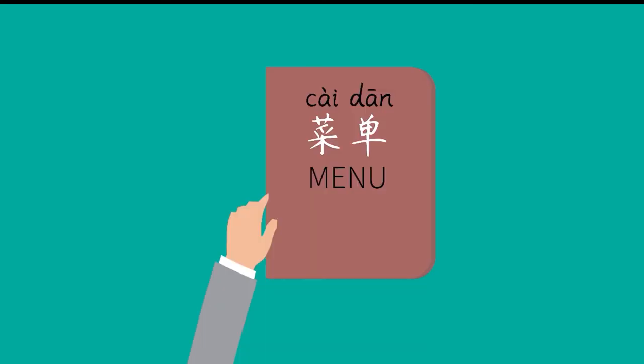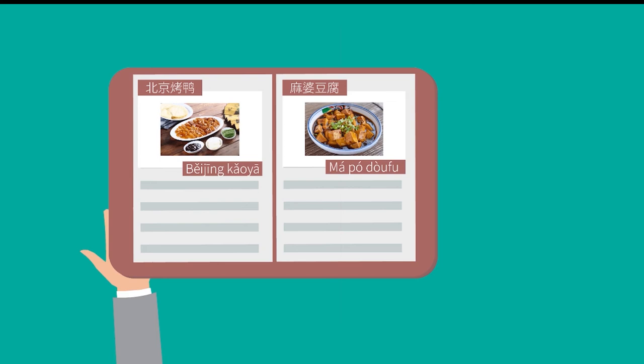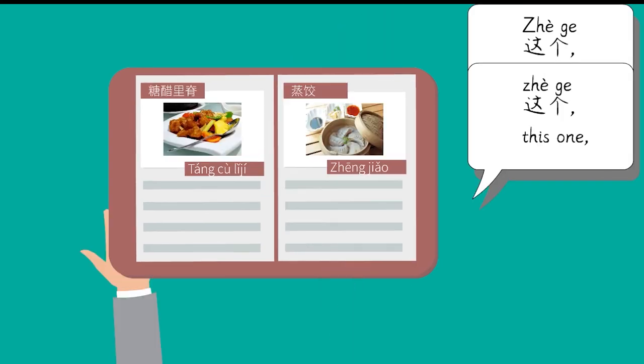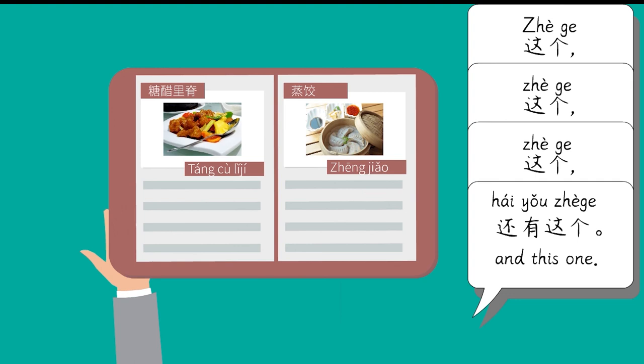You can just open the menu, 菜单, and point to the picture of the food you like and say 这个,这个,这个,还有这个. Is okay.